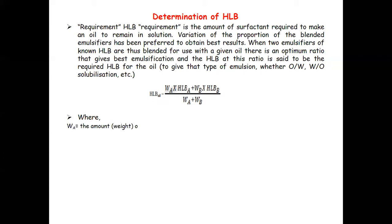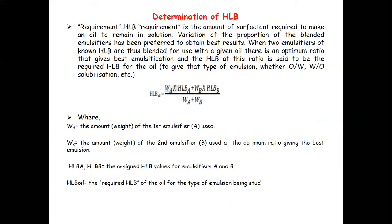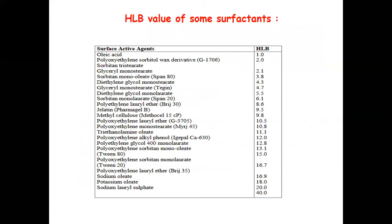The required HLB equals HLB_A times W_A plus HLB_B times W_B at the optimum ratio giving the best emulsion, where W_A and W_B are the amounts of emulsifiers A and B used. HLB_A and HLB_B are the assigned HLB values of those emulsifiers, and HLB_oil is the required HLB for the emulsion. A table of surfactant HLB values is also provided.